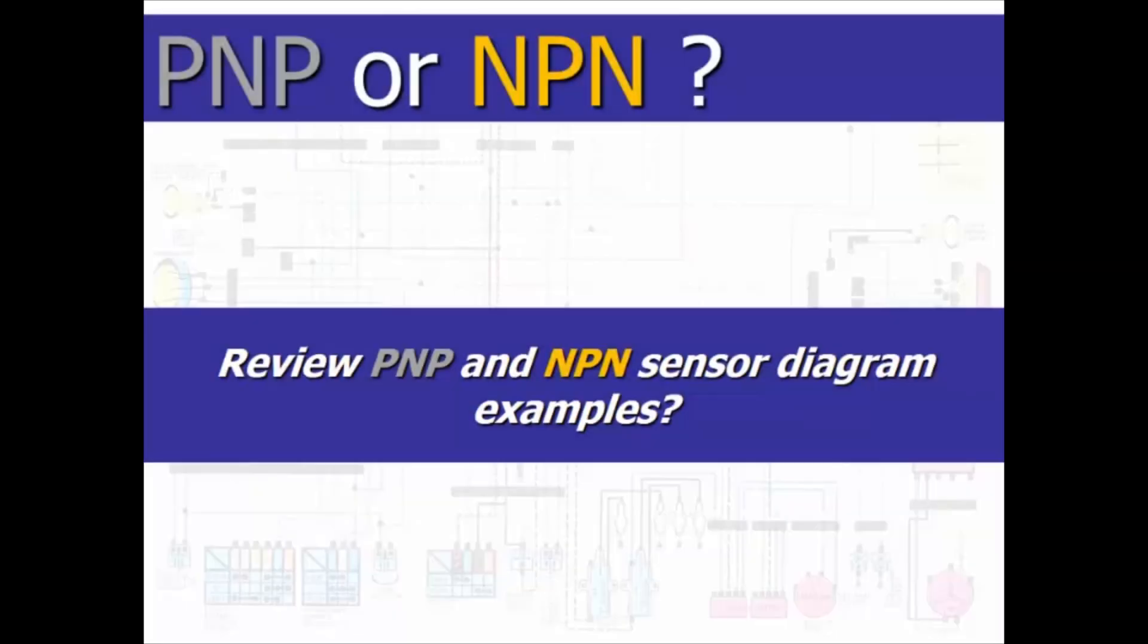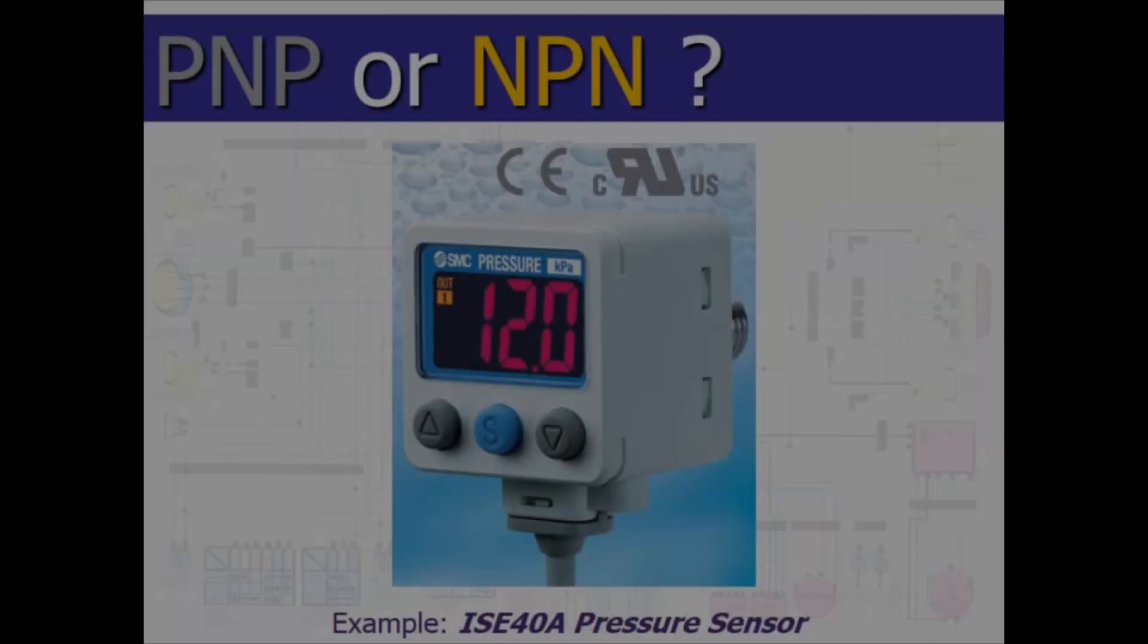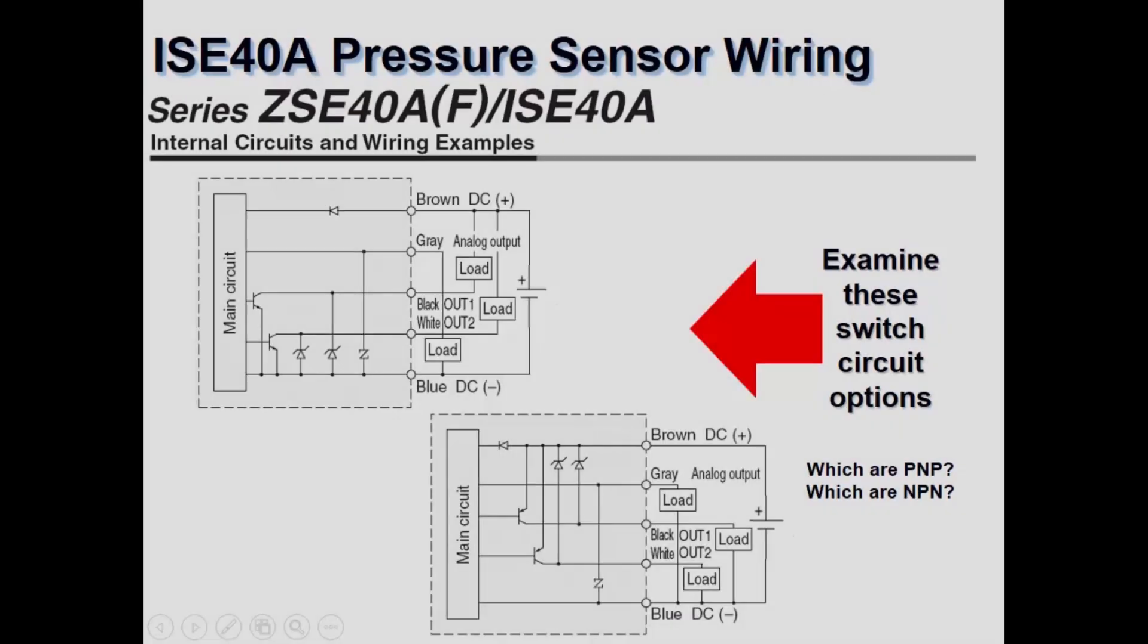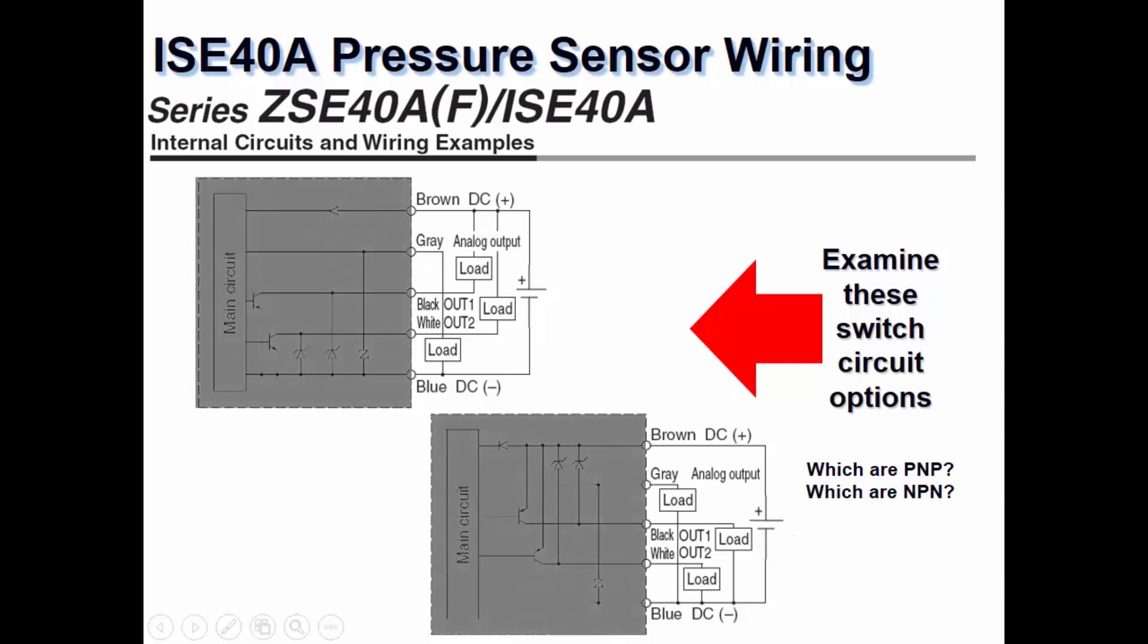It will also help to determine the polarity for the switches or sensors. We will check this on available options for the ISC40A pressure switch. If we isolate the wiring out to where the loads and commons are obvious, as this shading does, we can see much more clearly what is needed.